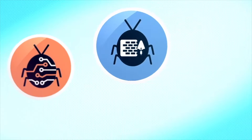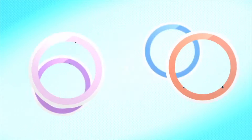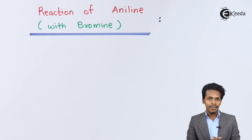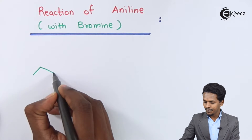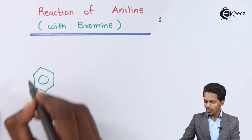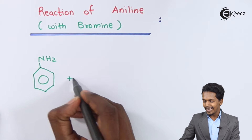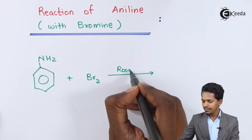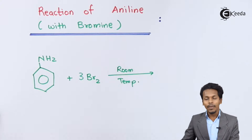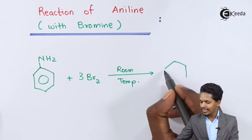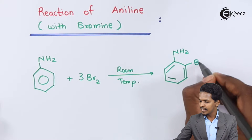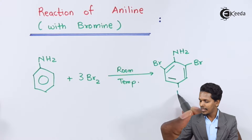We are going to talk about bromination. Suppose we consider aniline — here is the structure of aniline. If we react it with bromine water at room temperature, three moles of bromine are used, giving an electrophilic substitution. The bromine attaches at the ortho position as well as the para position.